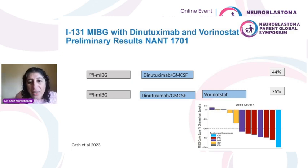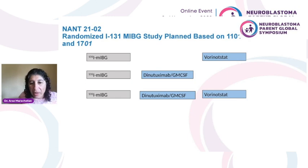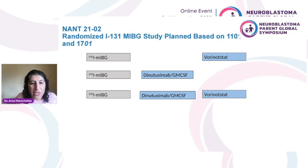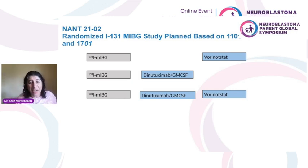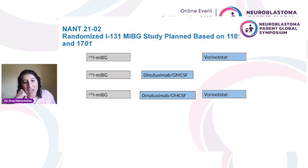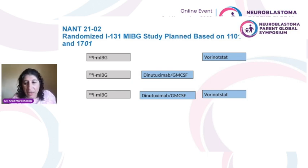Since that data, we now have a new upcoming randomized phase 2 trial that looks at which of these arms is optimal: MIBG with vorinostat as the current standard, versus the two arms from the NAND 1701 study — MIBG with dinotuximab, and MIBG with dinotuximab and vorinostat.